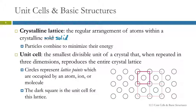It's a little bit like mosaic tiles or something in a bathroom. These circles are representing the lattice points — the points that would be occupied by an atom, an ion, or a molecule. And the unit cell is this dark square.